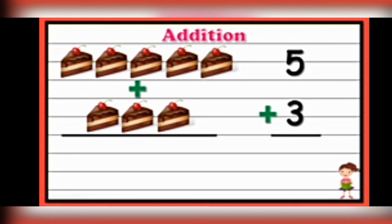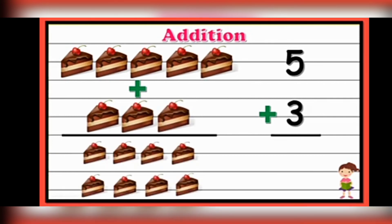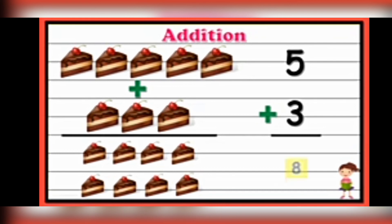I will give you 2 minutes. Now children, start counting. We have to count the pieces of cake. So here: 1, 2, 3, 4, and 5, plus 6, 7, 8. So how many pieces are there children? 8 pieces are there. So we will write 5 plus 3 equals 8.